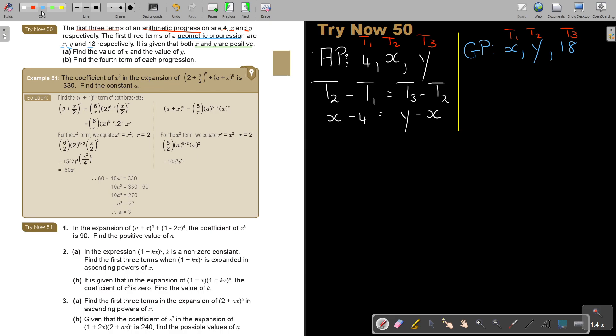So if I'm doing this, I will say term two divided by term one is equal to term three divided by term two. So it's going to be y over x is equal to 18 over y. Then I cross multiply, so y times y, it's y squared, and that is equal to 18x.